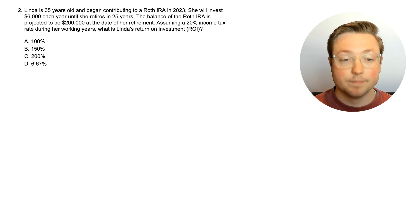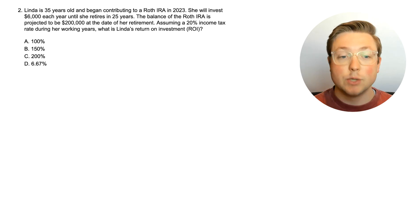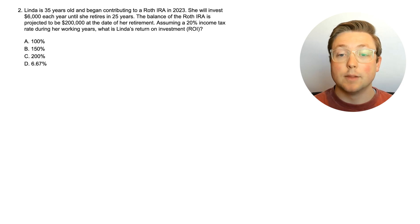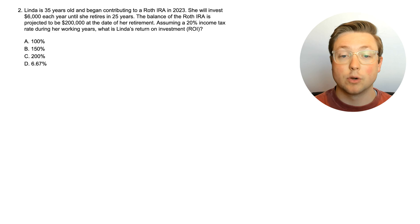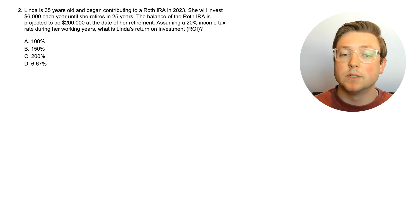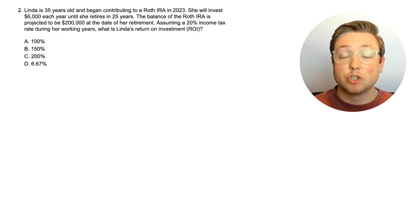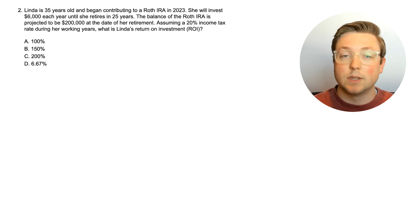Here is question 2. Linda is 35 years old and began contributing to a Roth IRA in 2023. She will invest $6,000 each year until she retires in 25 years. The balance of the Roth IRA is projected to be $200,000 at the date of her retirement. Assuming a 20% income tax rate during her working years, what is Linda's return on investment or ROI? The first question was really straightforward — we didn't have to incorporate tax. But now it's throwing in that there is a 20% income tax rate to consider.